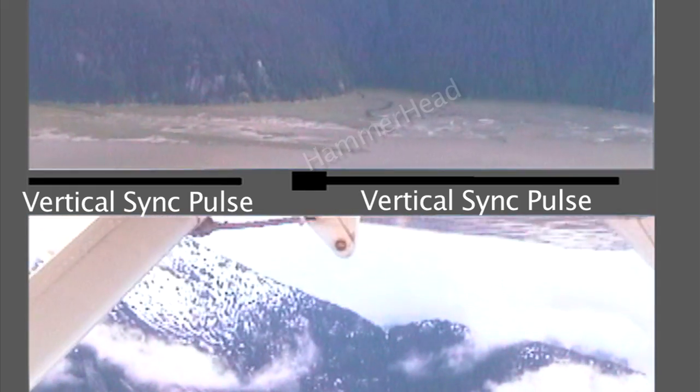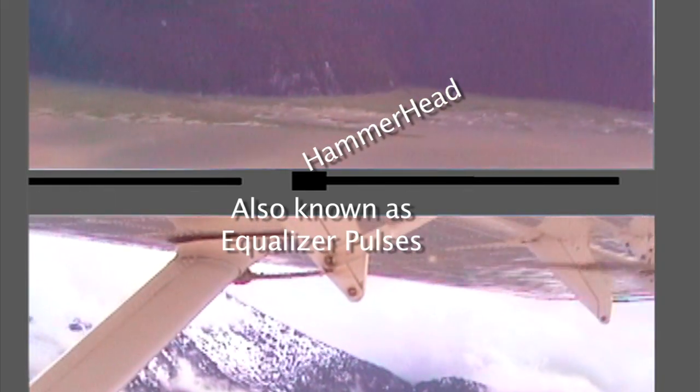When looking at a monitor with a cross pulse display, you can observe the vertical interval on the monitor screen. When observing this cross pulse display, you will see a dark black line extending from the left side of the screen. That is vertical sync. And that larger section in the middle is called the hammerhead. These are the equalizer pulses.